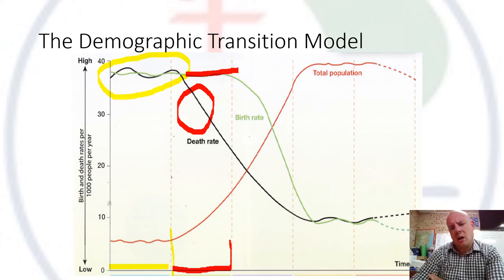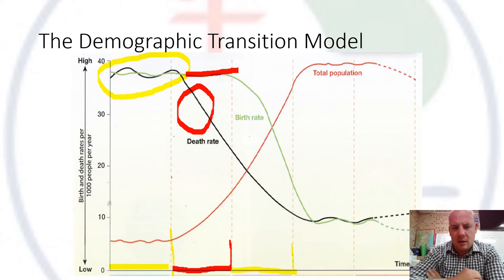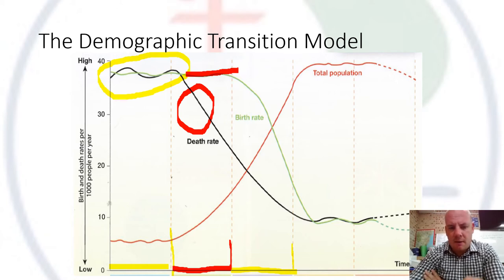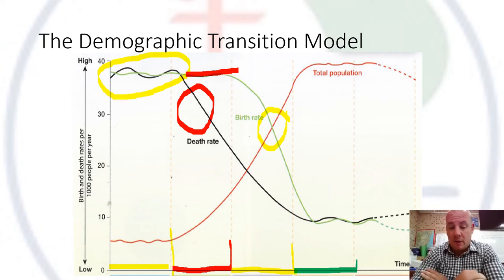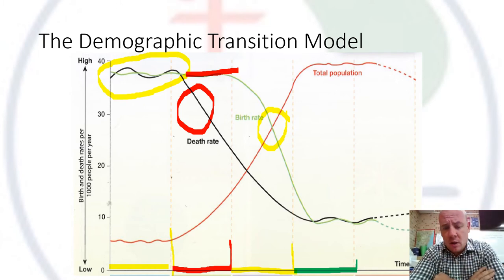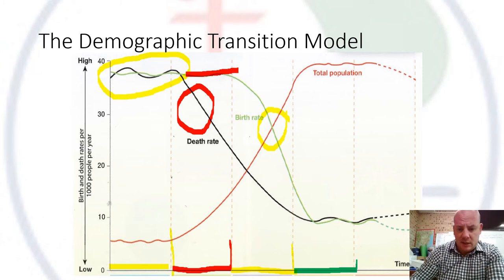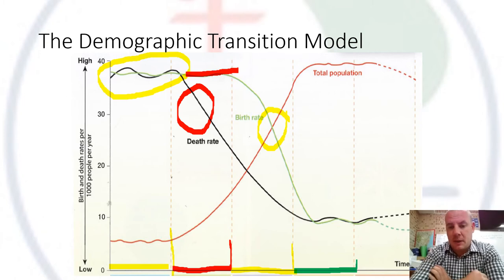We don't see a drop in the birth rate until stage three, where birth rates begin decreasing as well as death rates, and as a result the population drastically increases. Stage four is where developed countries are: death rates and birth rates reach a similar level, and as a result population starts to stagnate. Stage three is where developing countries currently sit.